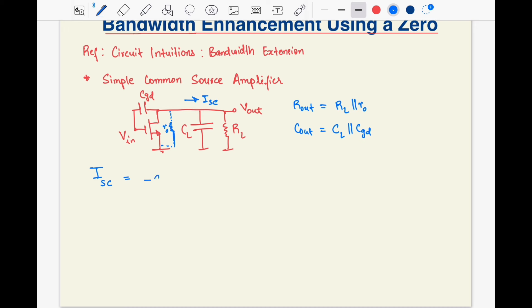The transfer function can then be derived from the Norton's equivalent, which would come out to be minus gm times 1 minus s cgd over gm divided by 1 plus s cout rout.